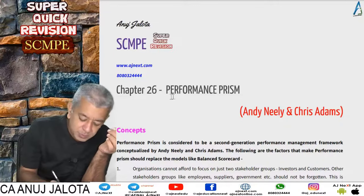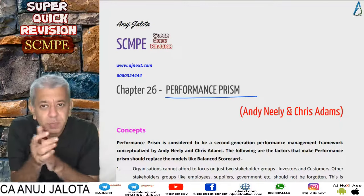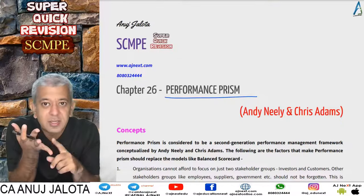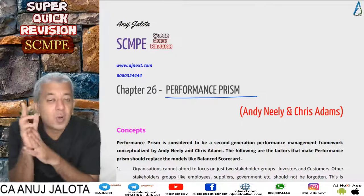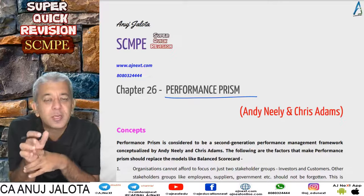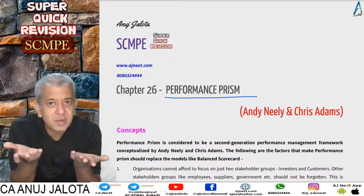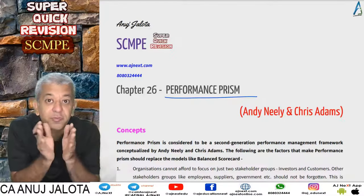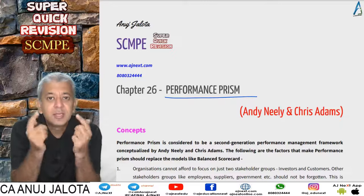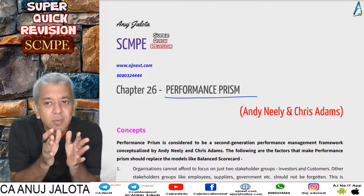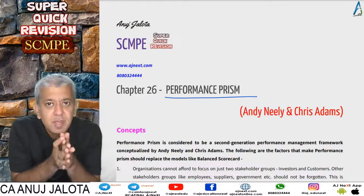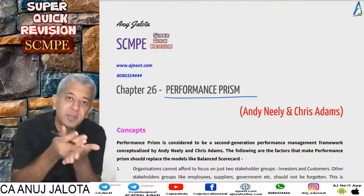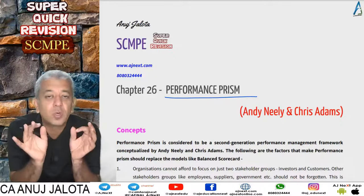Hence came Performance Prism. Another disadvantage of the Balanced Scorecard was that it basically tries to say what the company should do to make customers and shareholders happy, but there was nothing about what the duty of those shareholders and customers is towards the company. For example, investors have a duty to give capital whenever required for expansion, and customers have a duty to pay fair prices. This is called quid pro quo.